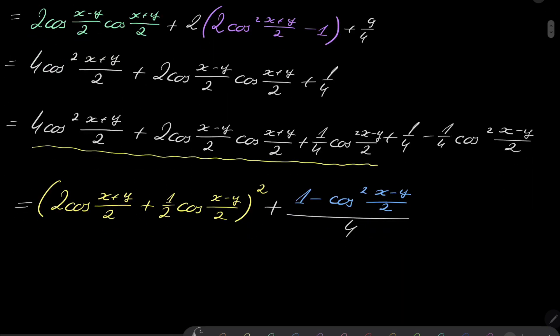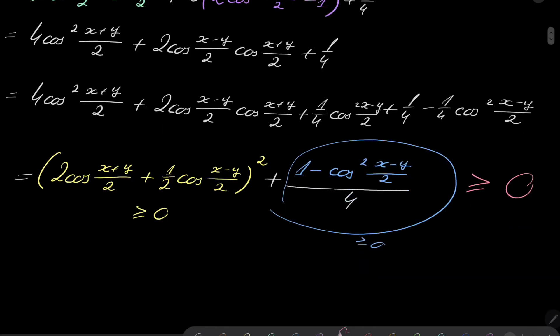And now let's notice the following. This term written in yellow is of course greater than or equal to 0 because it's a square. And this term right here is also greater than or equal to 0, because cosine is between minus 1 and 1, so cosine squared is for sure less than 1. So this is also non-negative. If we add two non-negative numbers, the whole result is again non-negative, which closes our proof because it is exactly what we wanted to demonstrate.